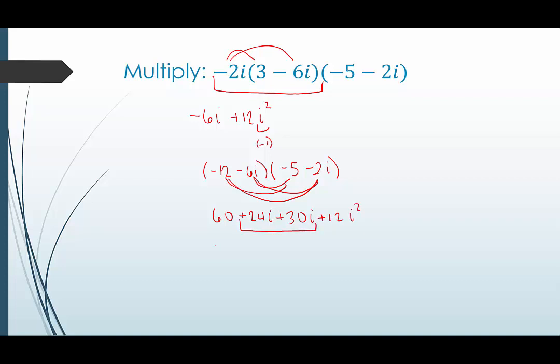Combining our like terms in the middle. So we end up with 60 plus 54i. Here we have that i squared. That's negative 1. 12 times negative 1 will be minus 12. Now we have like terms of 60 and minus 12. So that gives us 48 plus 54i as our final product.